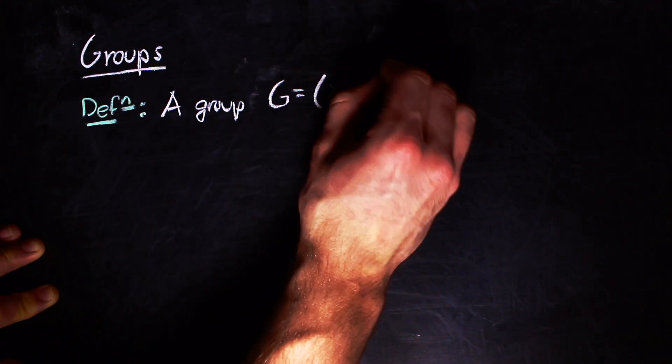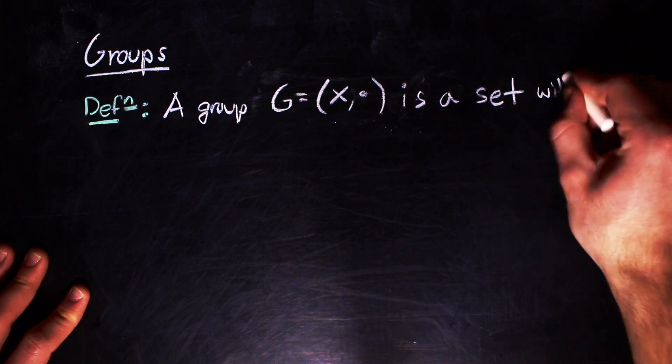An introductory course in algebra from a theoretic point of view usually begins with group theory. A group G is a set X in a group operation commonly denoted by a dot or in some cases implied by concatenation.